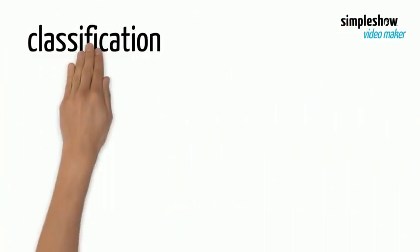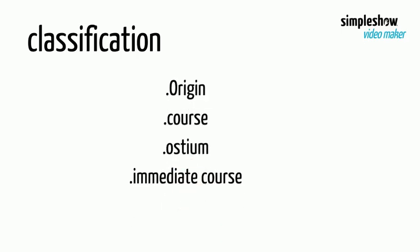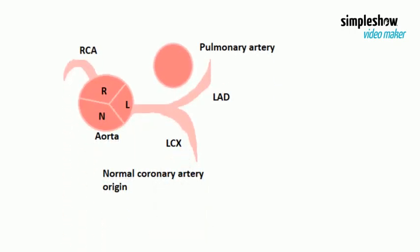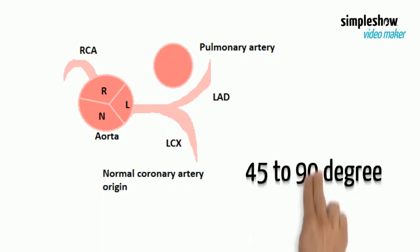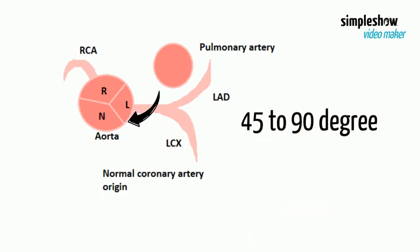Types of anomalous origins are classified by nomenclature based upon the origin, ostium, and immediate course. In normal anatomy, the coronary anatomy consists of 2 to 4 ostia, with arteries arising from the right and left sinuses of Valsalva at an orientation of 45 to 90 degrees from the aortic wall.